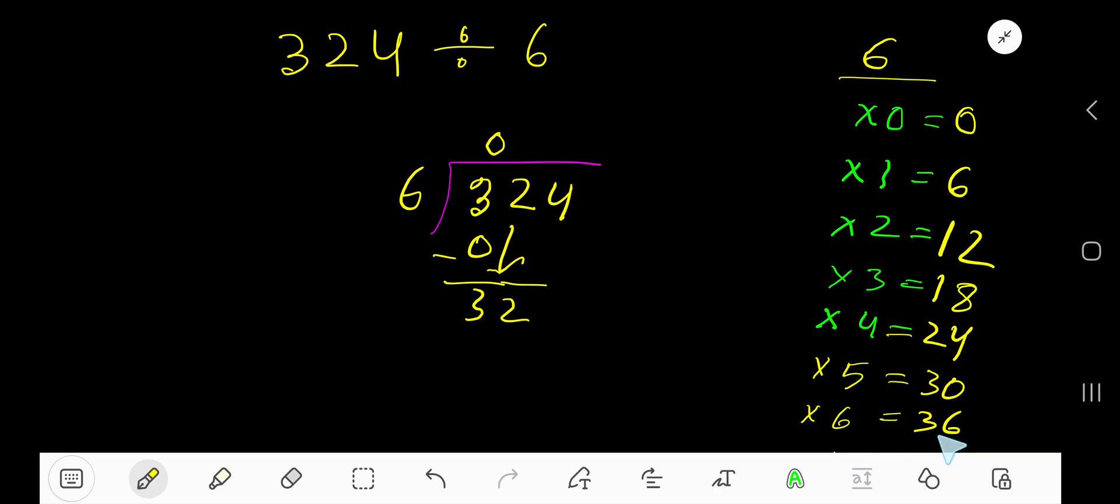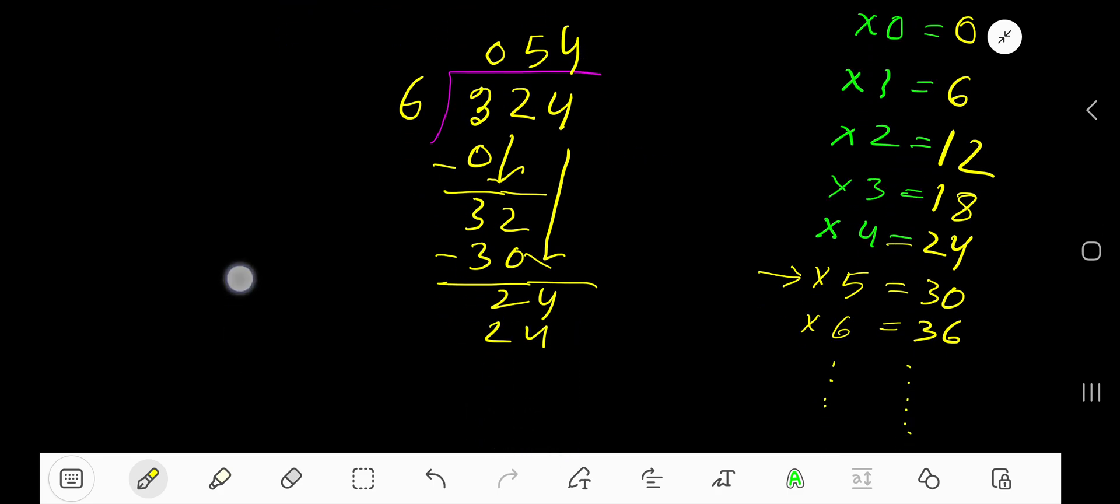5 times 6 is 30, subtract. Bring down this 4. 6 goes into 24 how many times? 24. 4 times, right? 4 times 6 is 24.